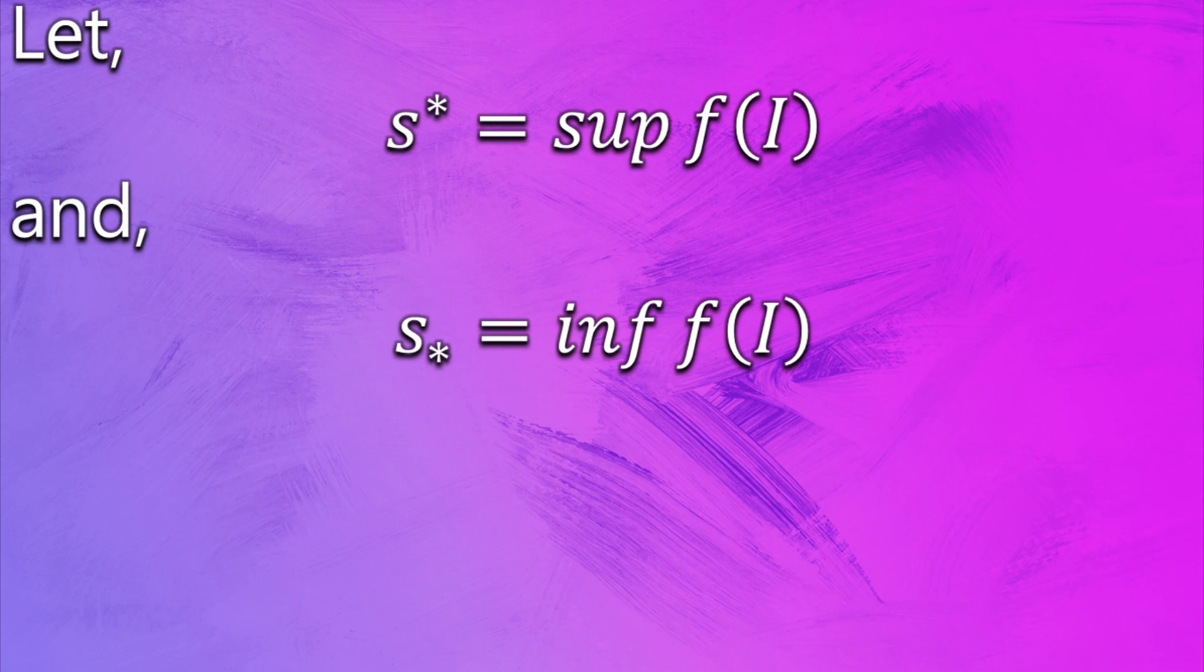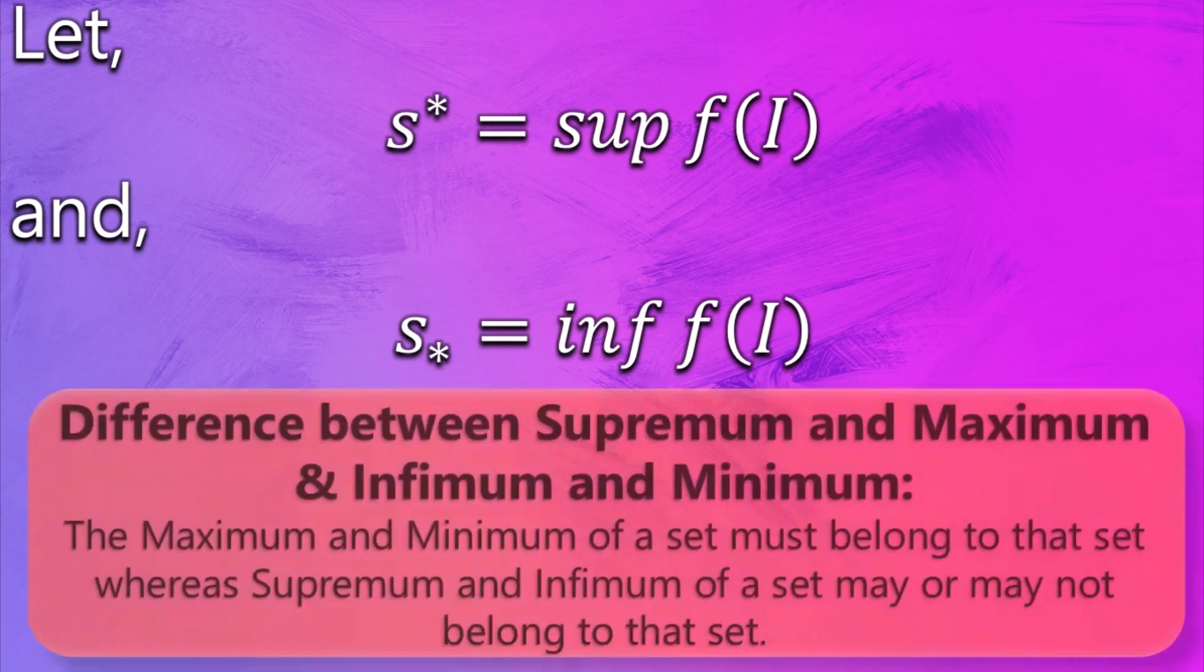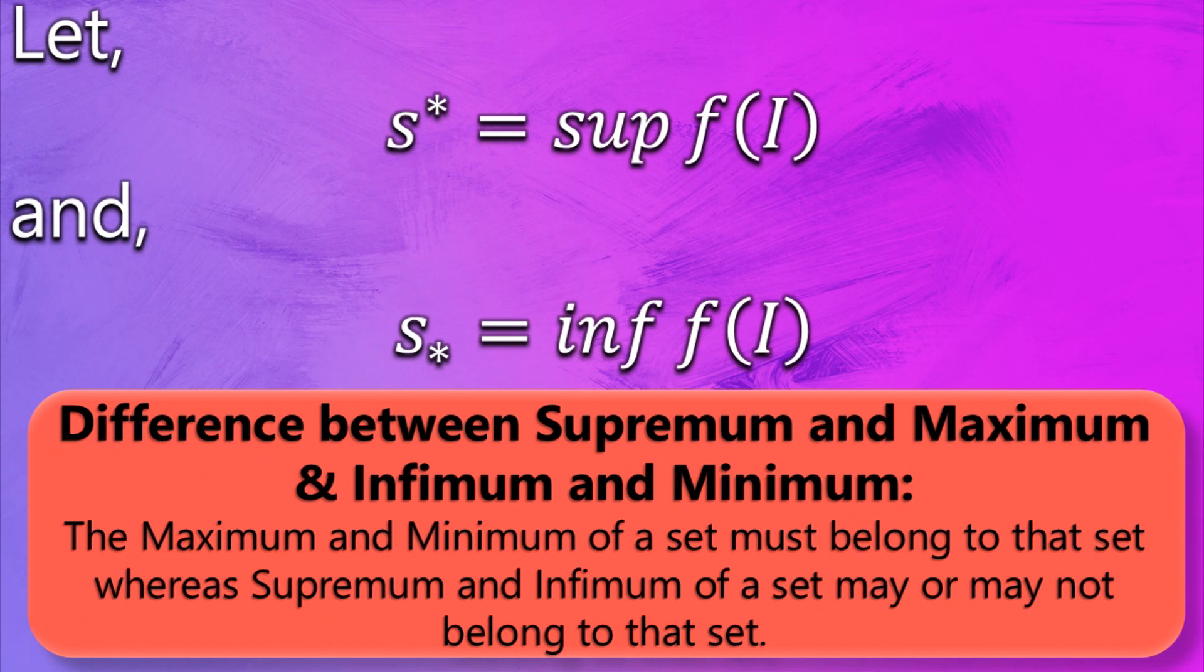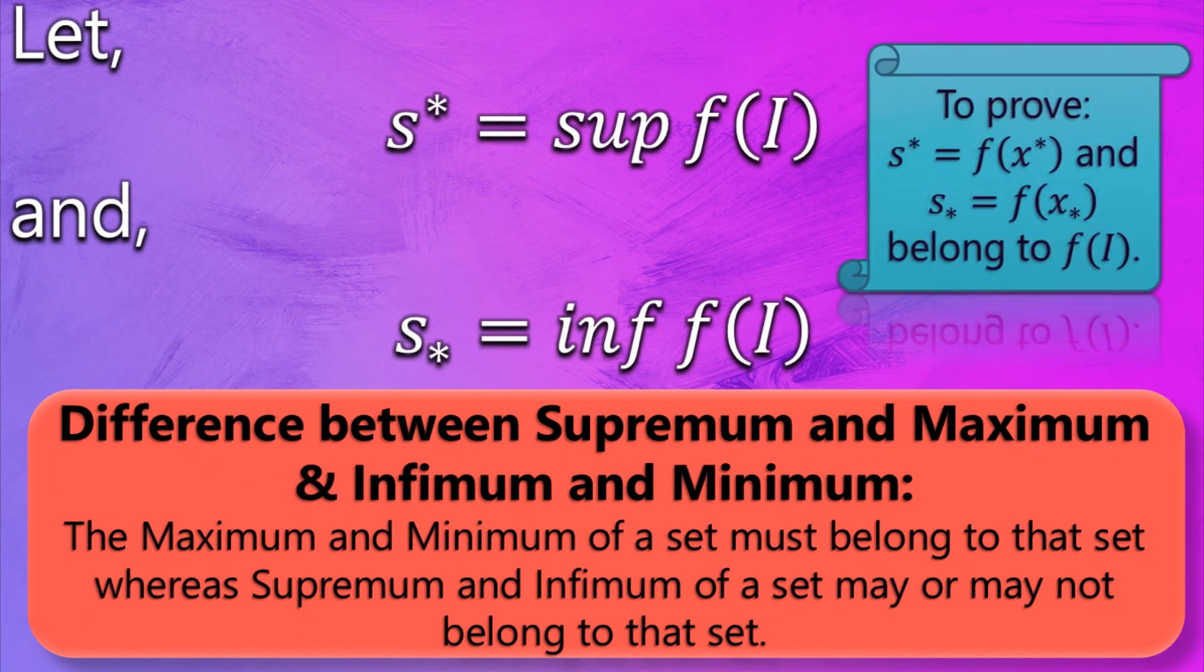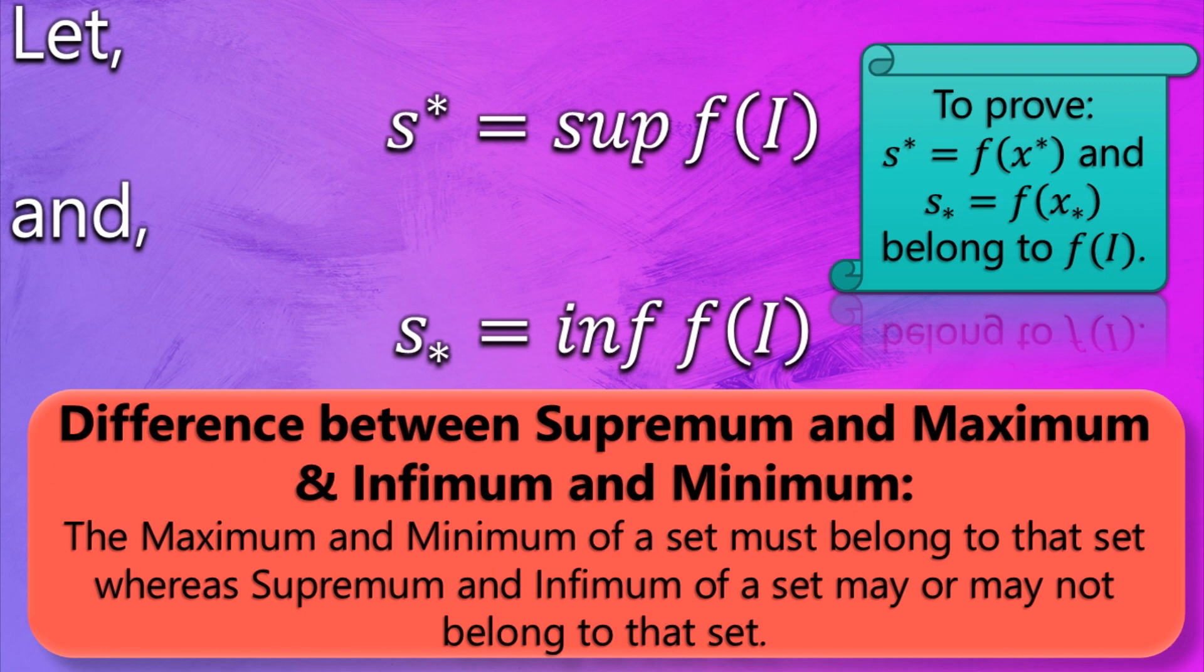So let s* be the supremum of F(I) and s* be the infimum of F(I). One thing that needs to be clarified here is maximum and minimum must belong to the set, whereas no such condition applies on supremum and infimum. So we basically need to prove that the supremum or infimum of F(I) is also its absolute maximum or minimum respectively.